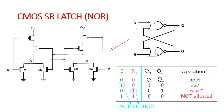NOR gate 1 has inputs S and Q, while NOR gate 2 has inputs R and Q bar. For NOR gate 1, since NMOS transistors are in parallel in a NOR gate, S and Q — let's call them M1 and M2 — are in parallel in the pull-down network. In the pull-up network, PMOS transistors for S and Q are in series. The output of this first NOR gate is Q bar.